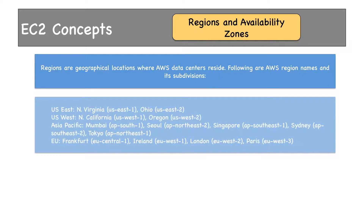Following are some of the AWS region names and their subdivisions. In the US East location, there are two regions: US East 1 and US East 2, which are North Virginia and Ohio. In US West, there are again two regions: North California or US West 1, and Oregon or US West 2.